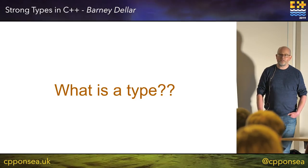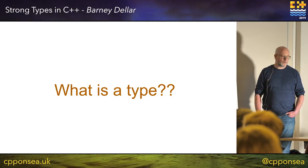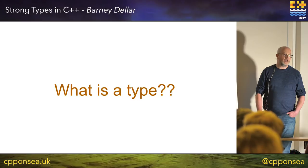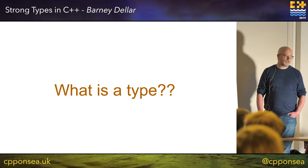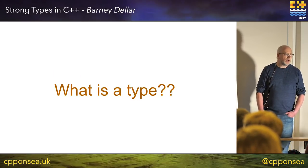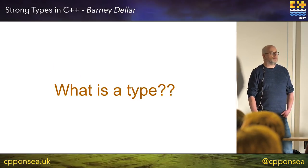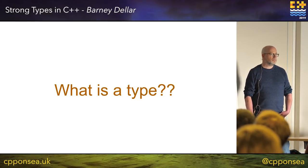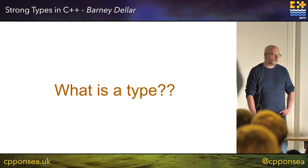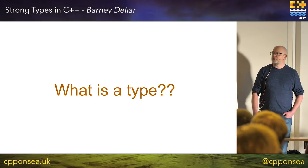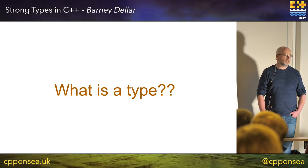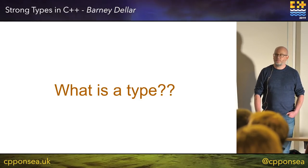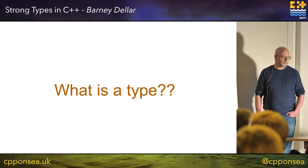C++ is, at least in part, an object-oriented language. We define classes to represent our data, and we often think of types as being the same thing as classes. And of course, we also have the native built-in types such as float, int, bool, that kind of thing.